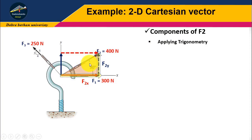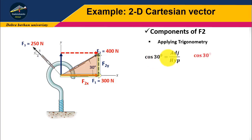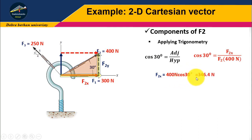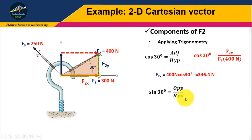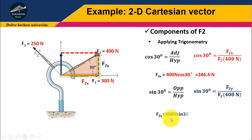Let us consider cos 30 degrees. Cos 30 degrees equals adjacent over hypotenuse, so cos 30 degrees equals F2X divided by F2, which is 400 Newton. By rearranging, F2X equals 400 Newton times cos 30 degrees, which equals 346.4 Newton. Similarly, sin 30 degrees equals opposite over hypotenuse, so sin 30 degrees equals F2Y divided by F2. By rearranging, F2Y equals 400 Newton times sin 30 degrees, which equals 200 Newton.